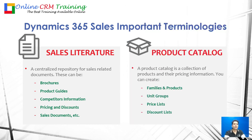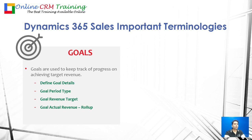Next you have product catalog. A product catalog is a collection of products and their pricing information. You can create products or services and define the unit group — for example, a PC can be sold in numbers, while training services can be charged on an hourly basis. You can define multiple price lists for different customer segments and also define discount lists, such as 5% discount for purchases of 0–10 units and 20% for 11–25 units. All product configuration, pricing, and discounts are maintained in the product catalog.